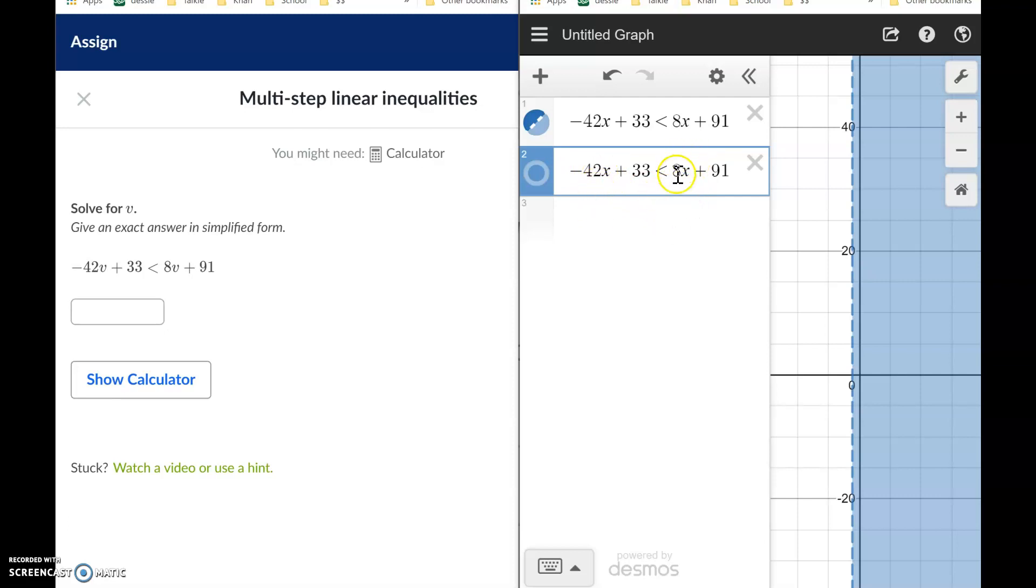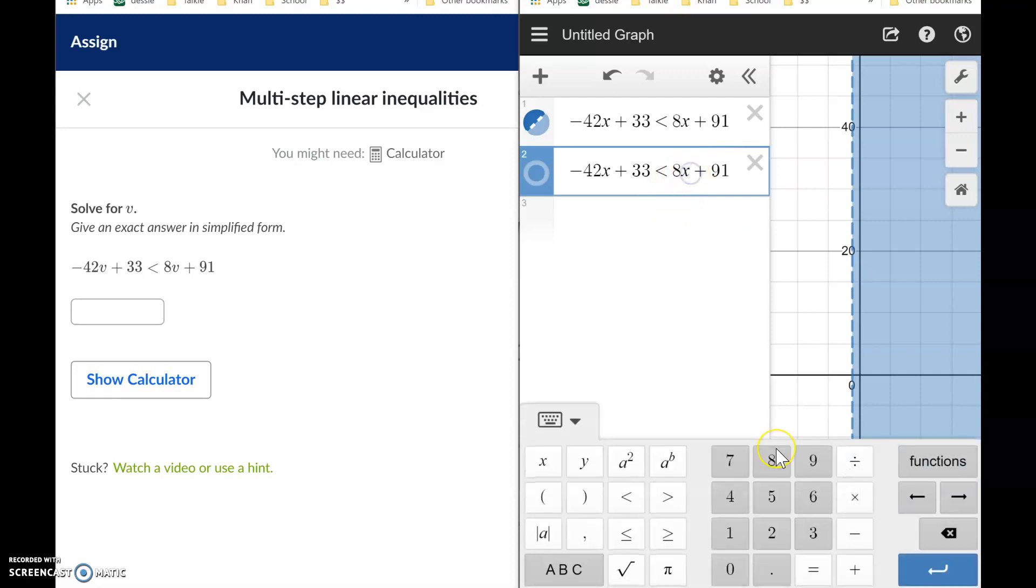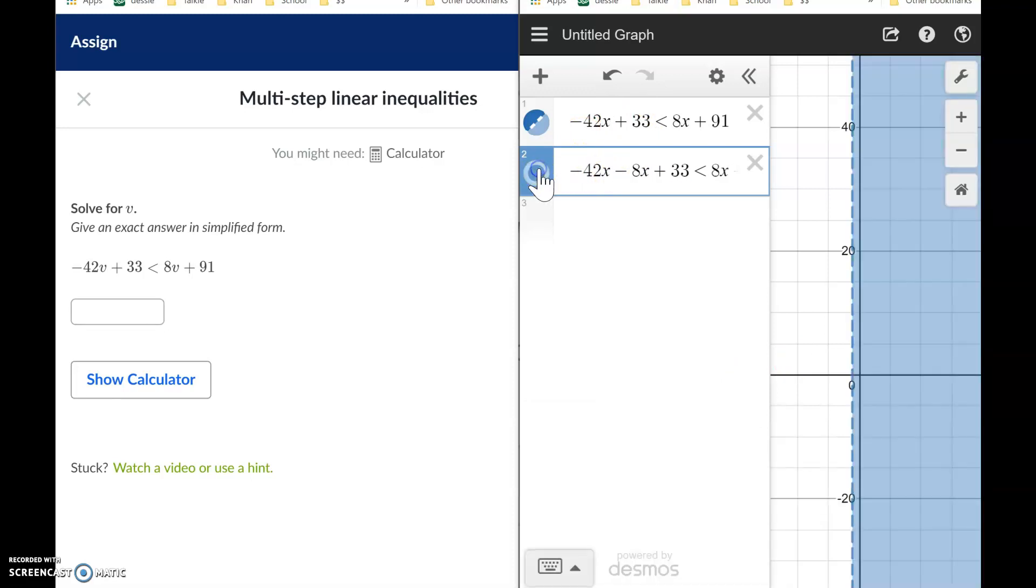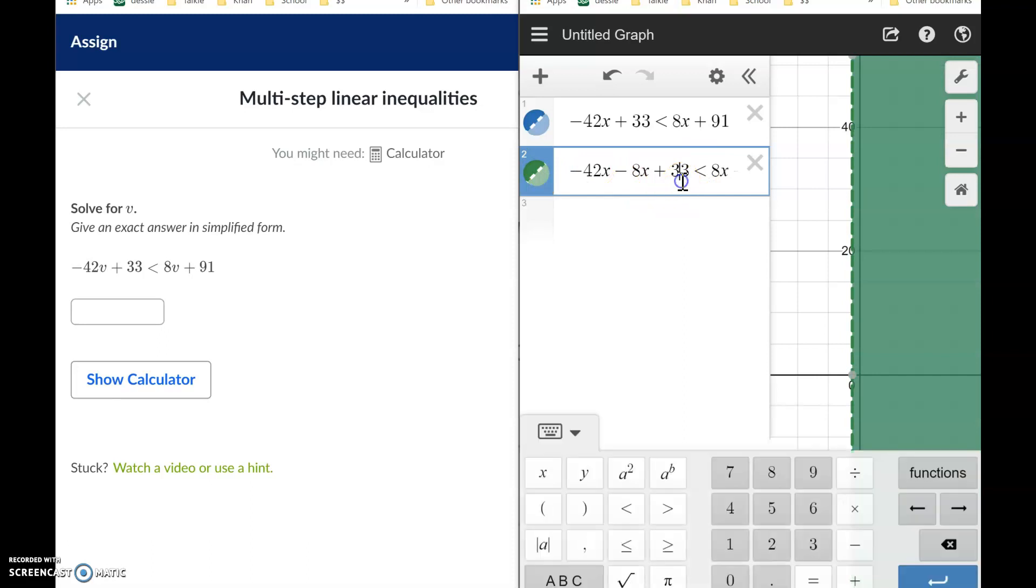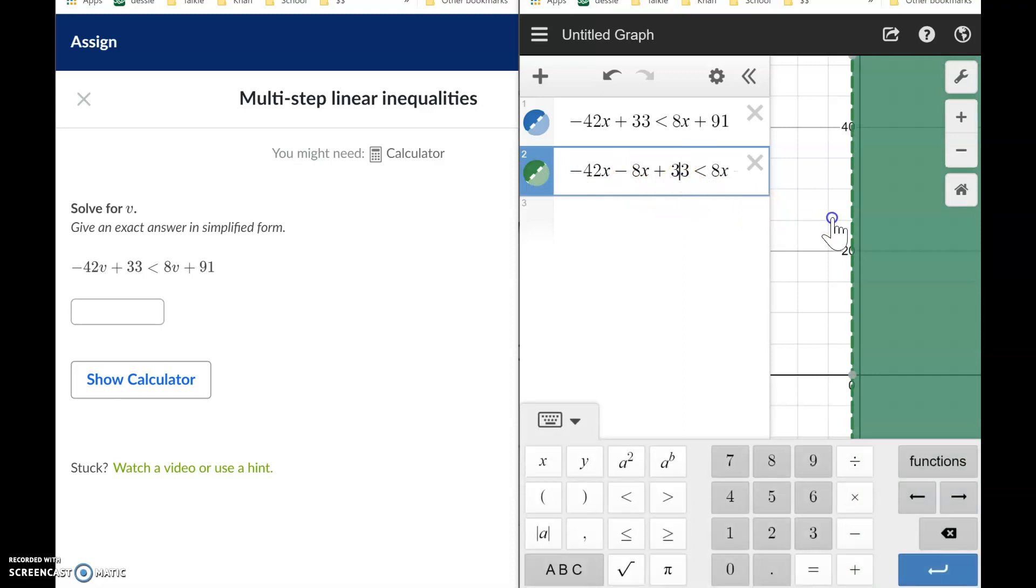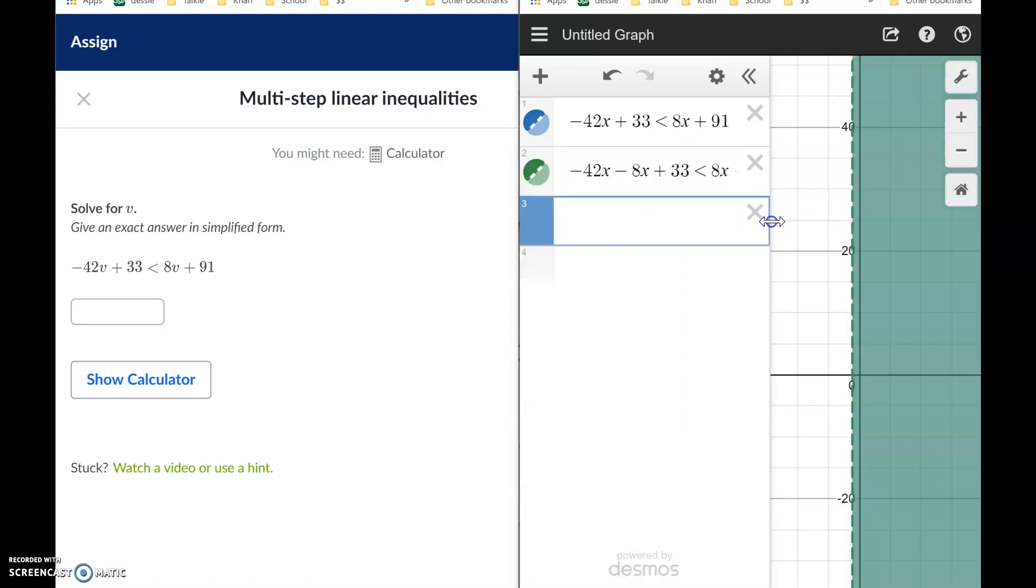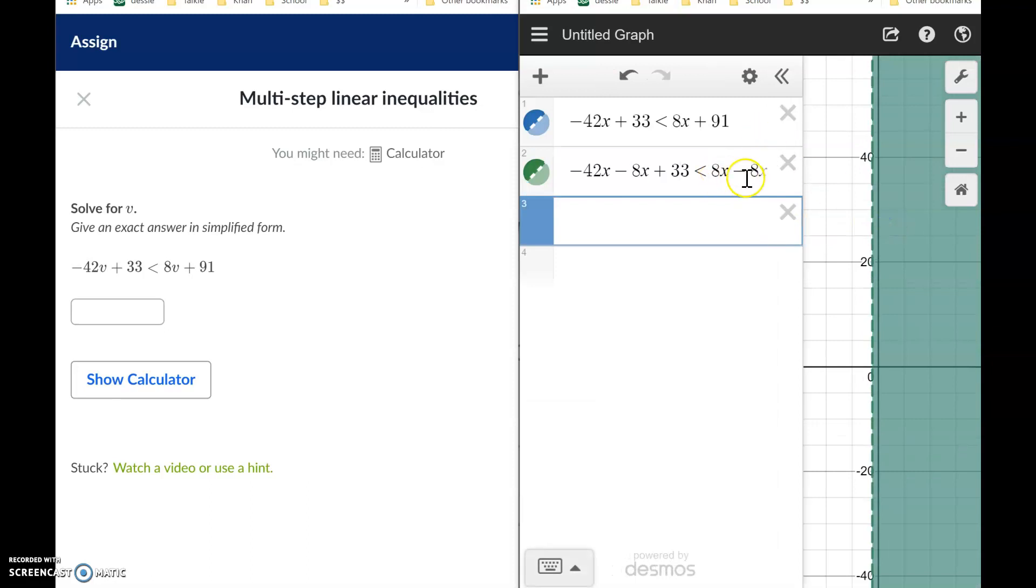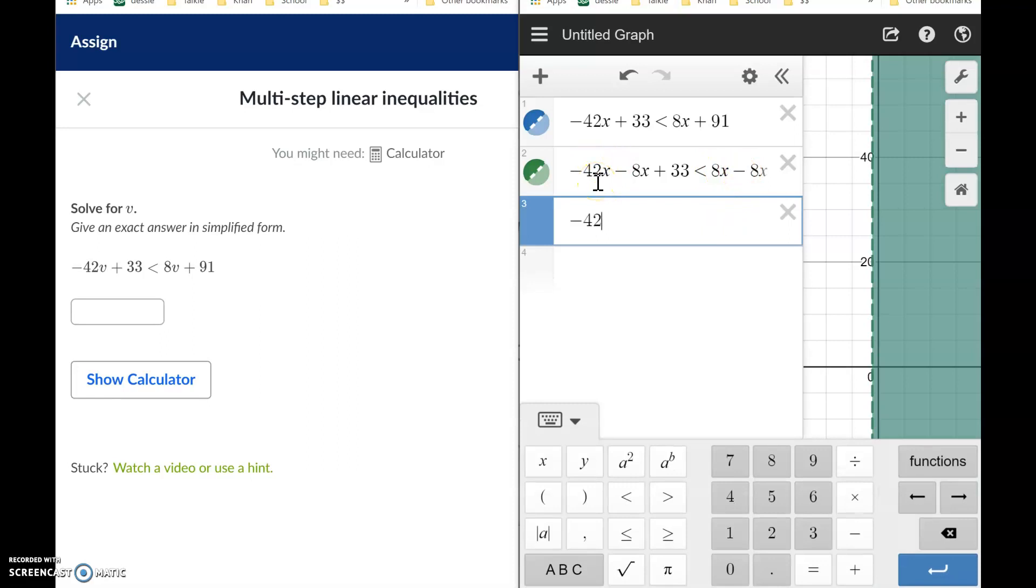I'm going to eliminate it on the right, so I'm going to subtract 8x from both sides. Minus 8x, boom. Let's see if it's still shaded. See how it's still perfectly shaded? I subtracted 8x there and 8x on the other side. I'm going to make this a little bigger so we can see it better. Now we've got to do the math, right? Those are going to zero out right here. We've got negative 42 minus 8, that's negative 50.